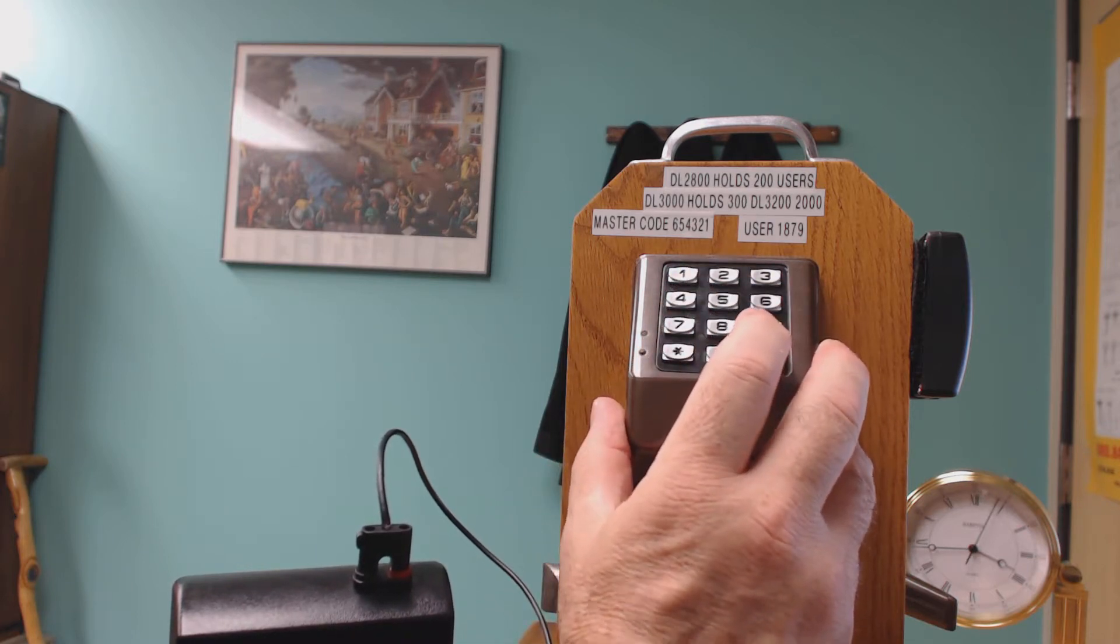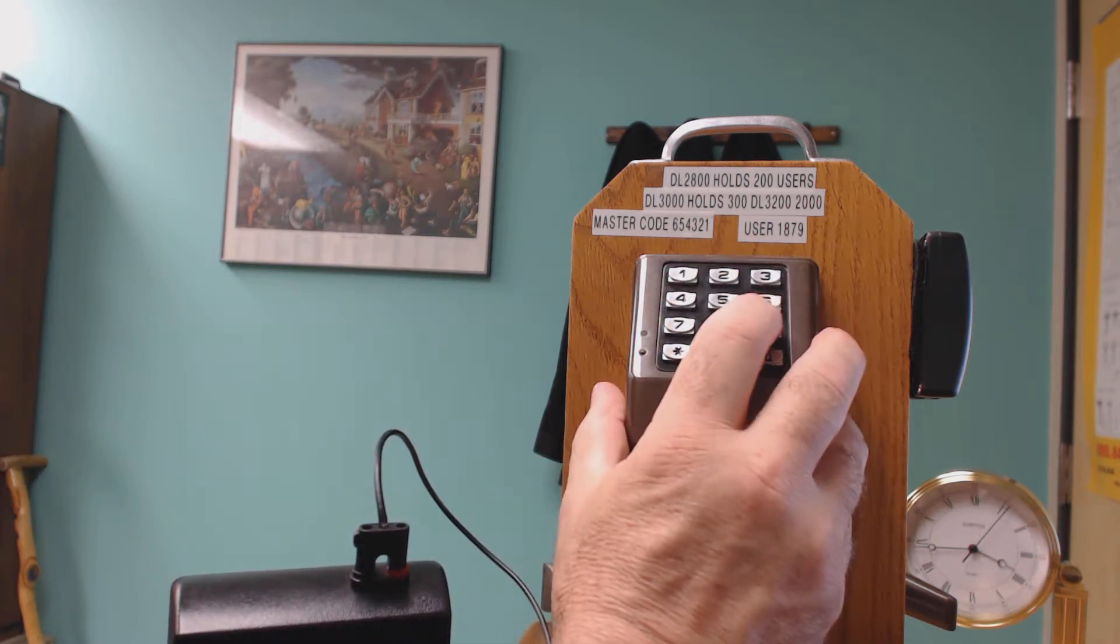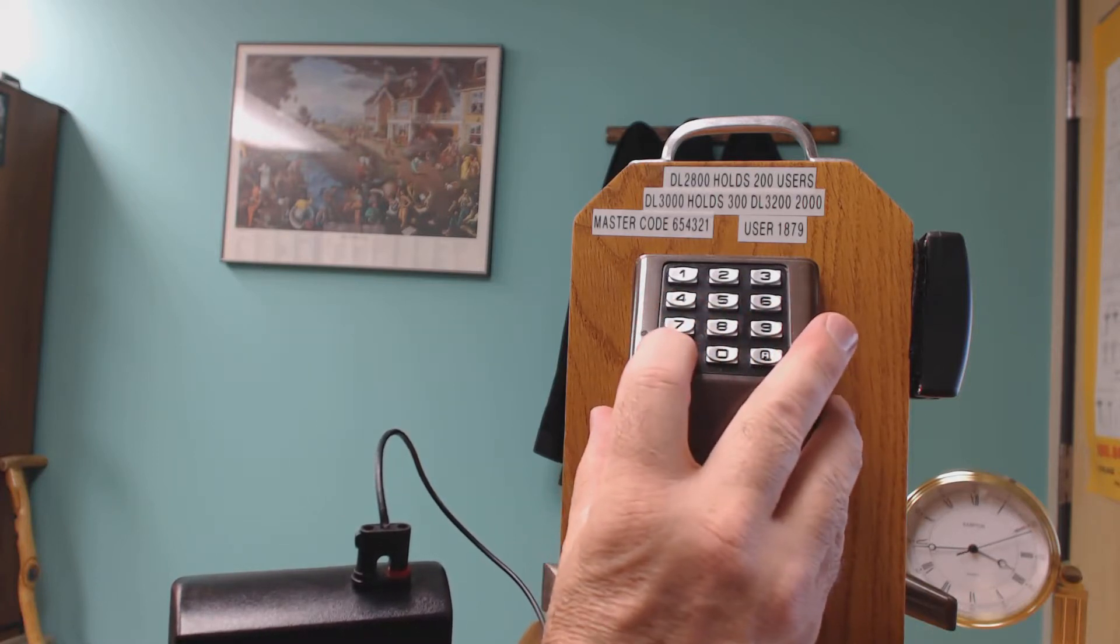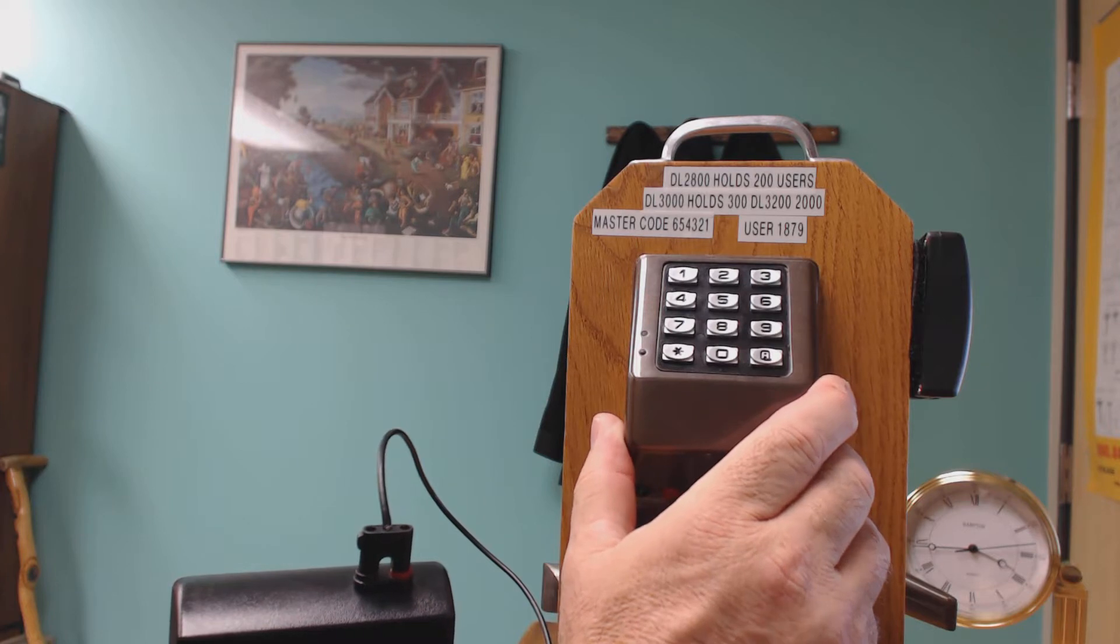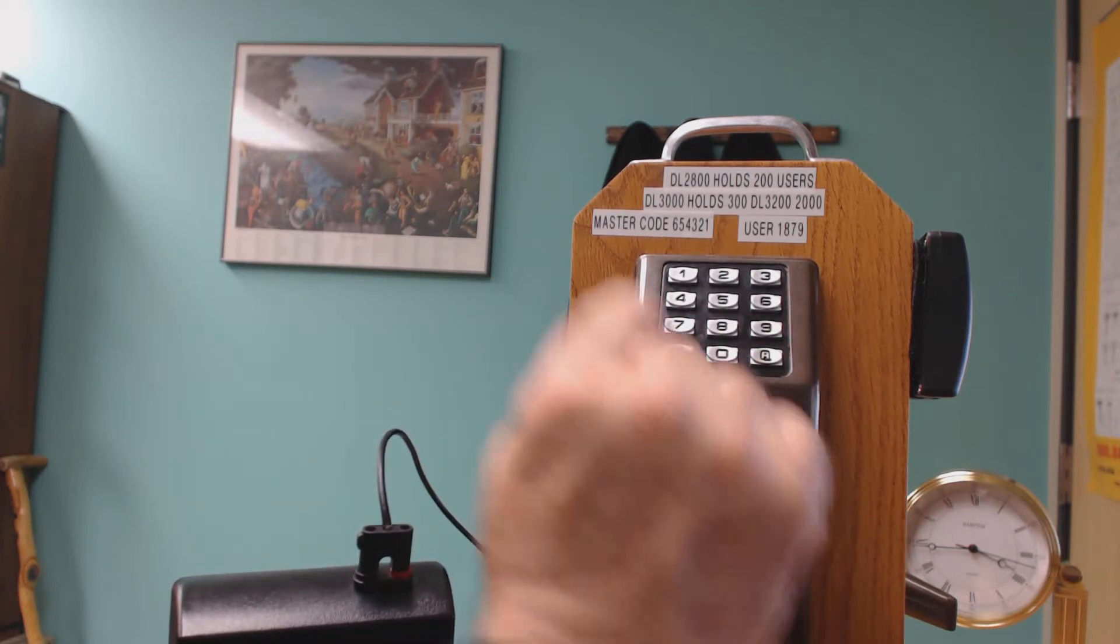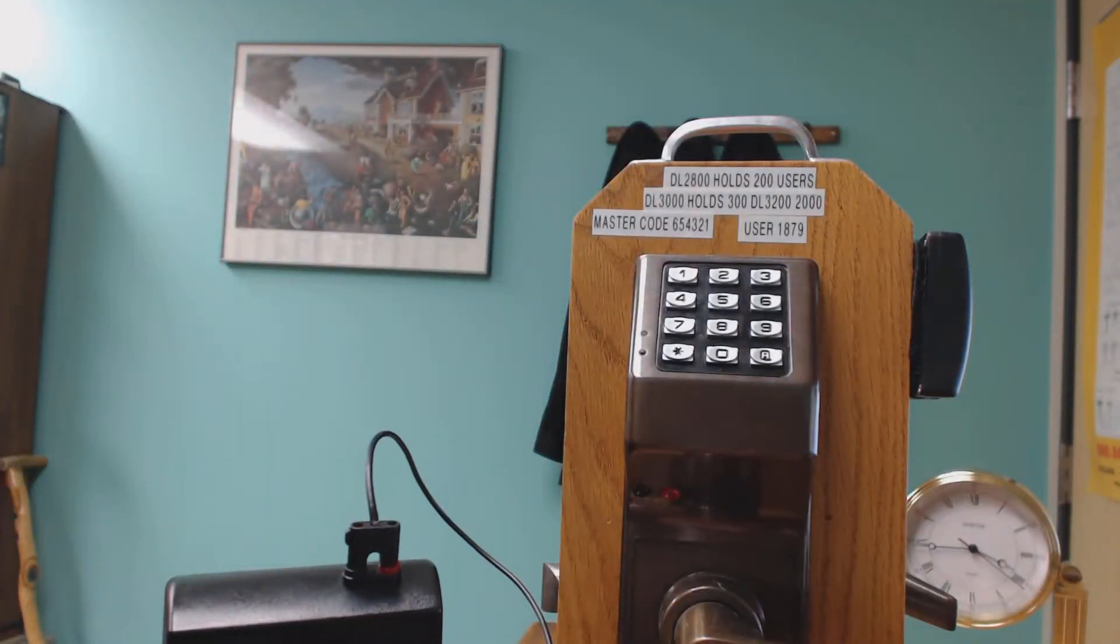I'm going to program a code in slot number 299, A, and then the code. My code is 777, star, all done. Now let's get out of program mode. Okay, we're out of program mode and this old one times out.